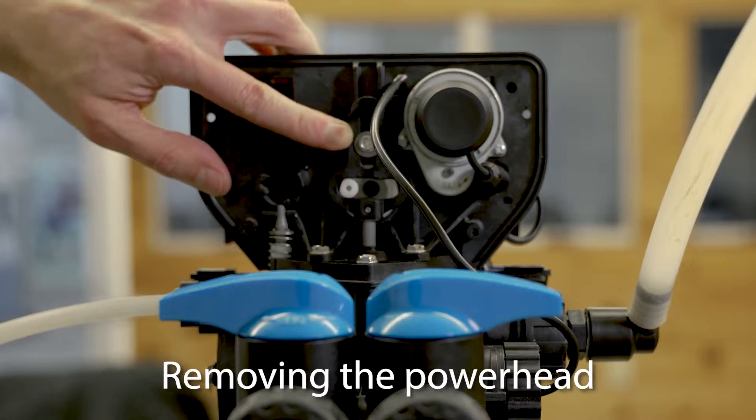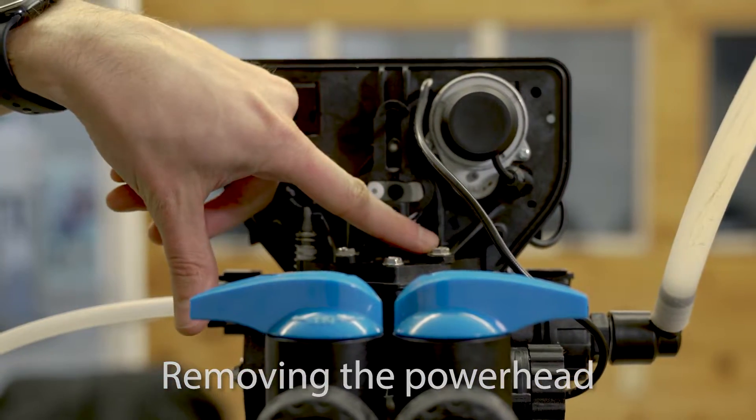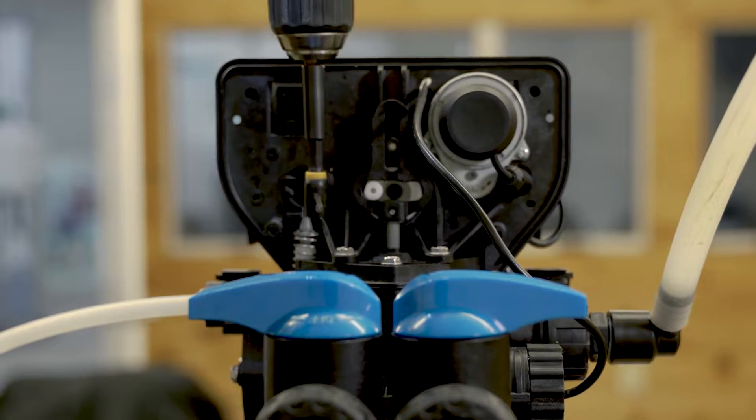Next, remove this piston guide screw and washer. Then remove these two screws that hold the power head onto the valve body assembly.